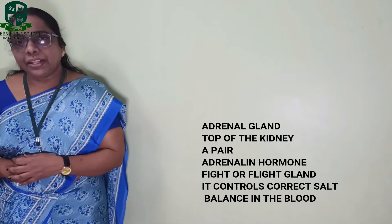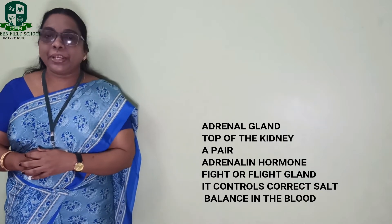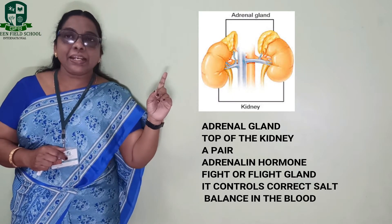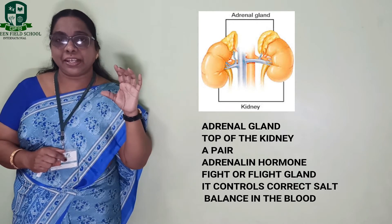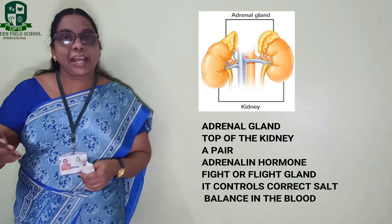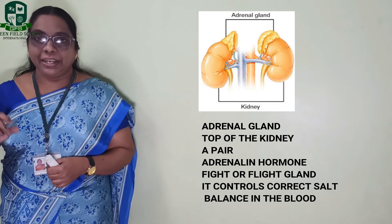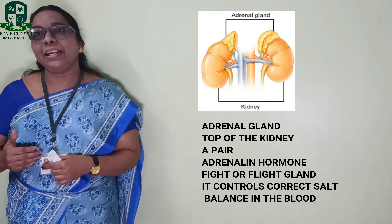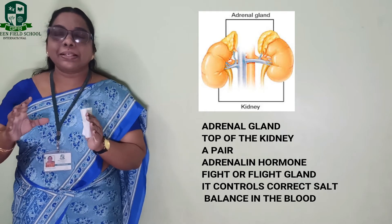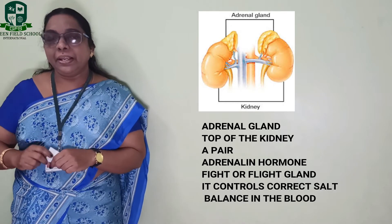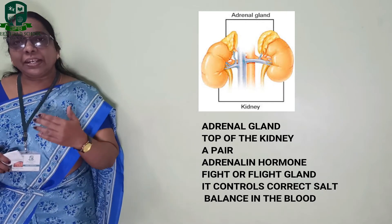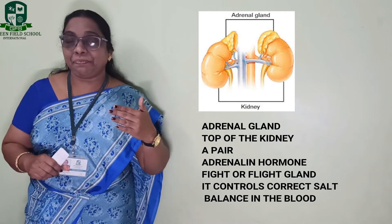The fifth gland is the adrenal gland. Look at this picture — the adrenal gland is present on top of the kidneys, just like a cap-like structure. A pair of adrenal glands are present, and these glands release a hormone called adrenaline. The function of adrenaline is to help maintain the salt levels in the blood, and this is maintained by the adrenal gland.